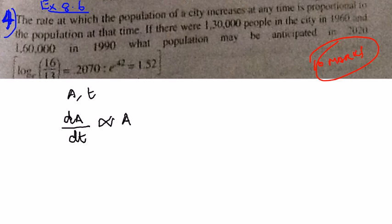So we can write dA by dt is proportional to A, and this can be written as dA by dt is equal to kA. Bringing in the equal to sign by removing the proportional sign, I have added a constant k. Therefore from this equation, A is equal to Ce power kt.